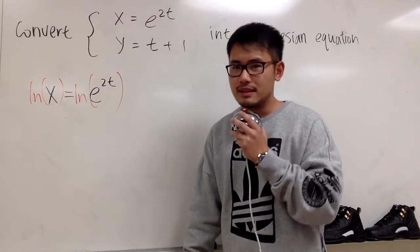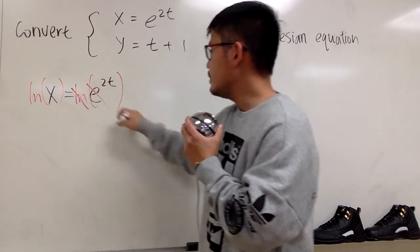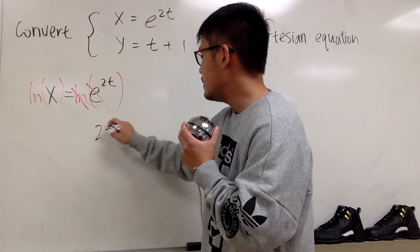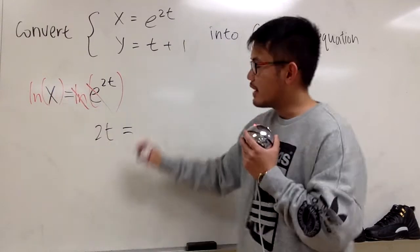We take the ln on both sides. This way, ln and e to the something cancel out, and we will just have 2t equals to lnx, right?